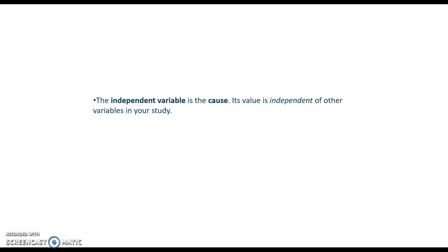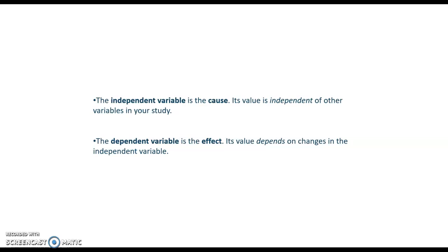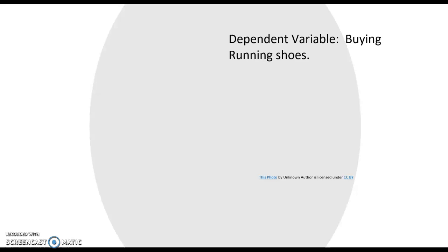The independent variables are the traits — demographics and psychographics. Their presence, degree, or absence affects other things. The dependent variable is the effect: the hammer is the independent variable, and the nail is the dependent variable. In our case, the dependent variable is buying — for an MVC, it's whatever defines that status, like buying ten times a year or spending a thousand dollars a year. I want to see which hammer drives the nail hardest.